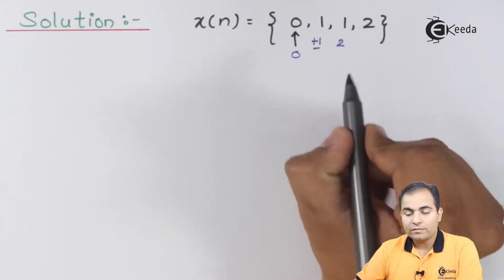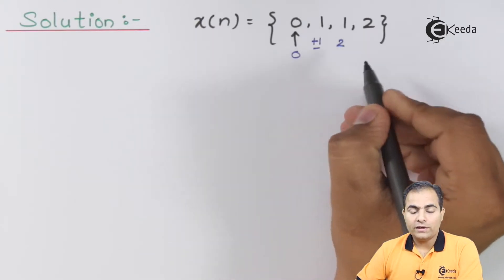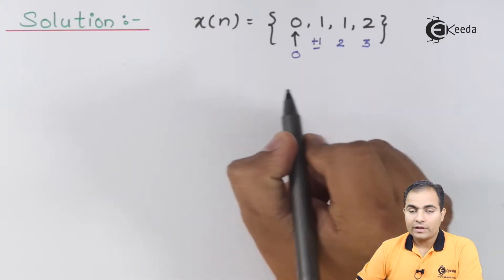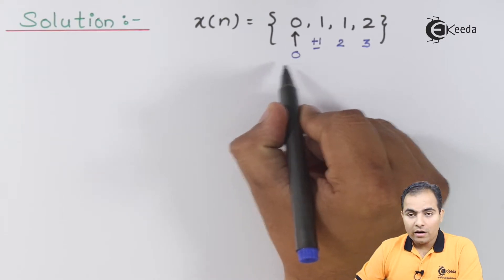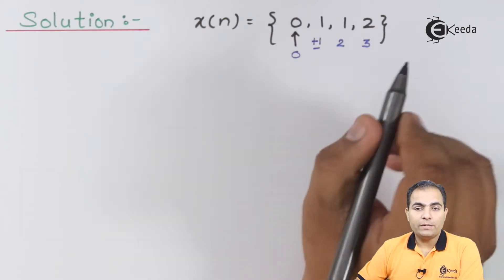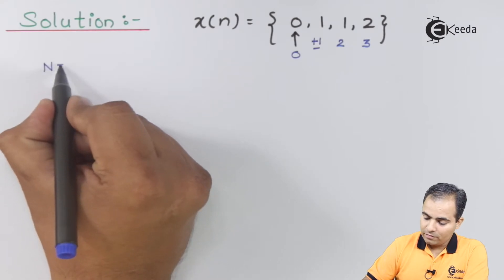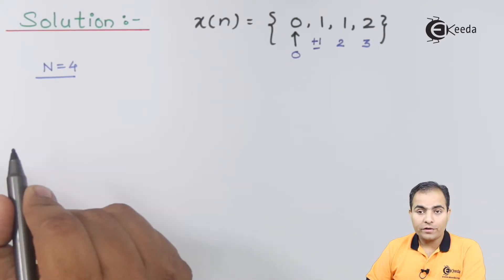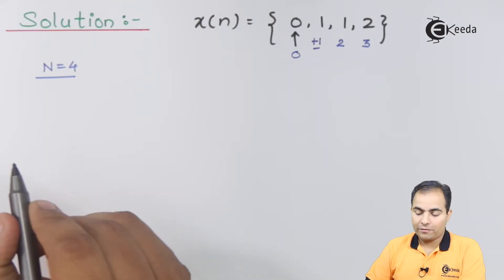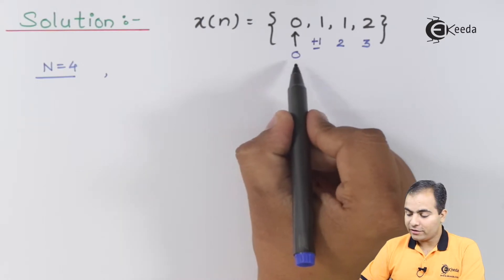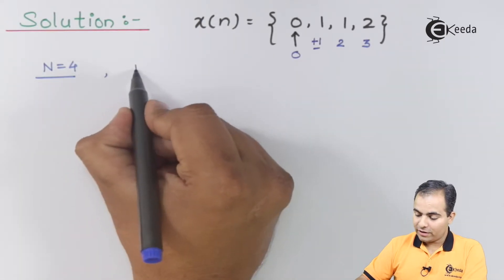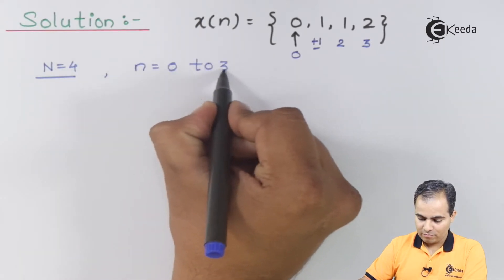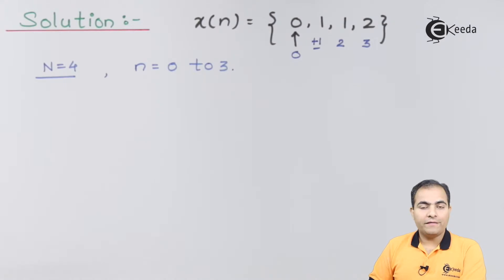At instant one the amplitude is one, at instant two the amplitude is one, and at instant three the amplitude is two. There are four samples in total. Our small n value varies from zero to three. Now we will apply the definition of the Z-transform.